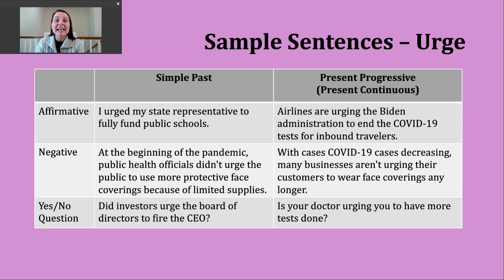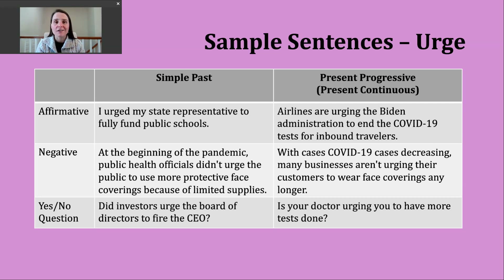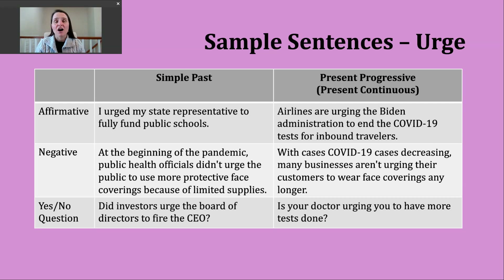Now let's look at making a yes or no question with the verb urge. To do this, we're going to start with did, then we're going to have our subject, then the base verb. Notice no -ed here in our yes or no question. An example: did investors urge the board of directors to fire the CEO? This could tie back to the second definition of our verb where we're talking about advocating for a particular course of action.